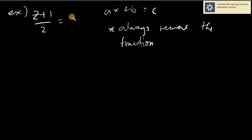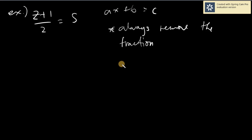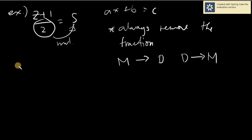Z plus 1 over 2 equals 5. One-half equals 1 divided by 2, so it is division. In transposition, whatever operation you have, you get the reverse — the reverse of division is multiplication. So if we transfer the divided-by-2 to the other side, it becomes multiplication: Z plus 1 equals 2 times 5, which is 10. So A equals 1, B equals 1, C equals 10.